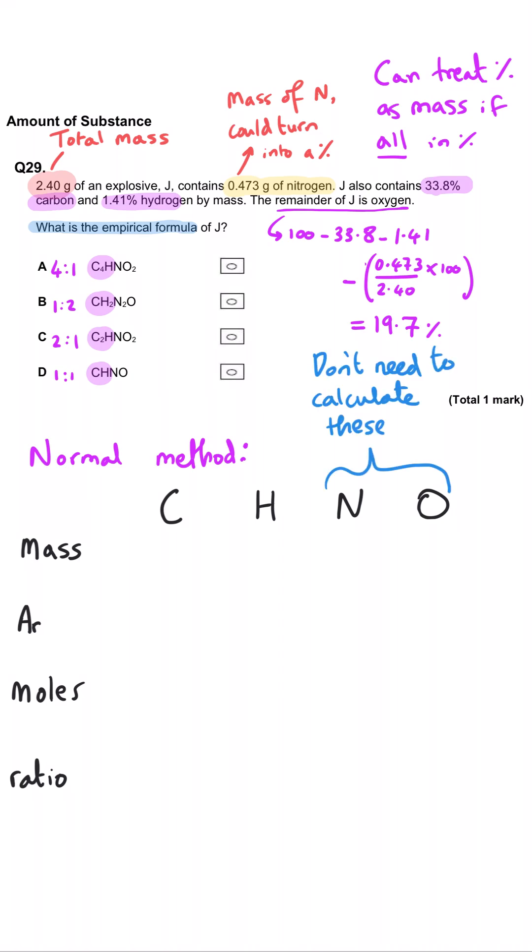So if you take your 33.8 for the carbon, divide it by its relative atomic mass, which is 12, you get 2.81. If you take the hydrogen, 1.41, and divide it by 1, you of course stay at 1.41.